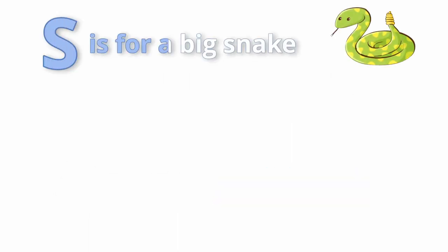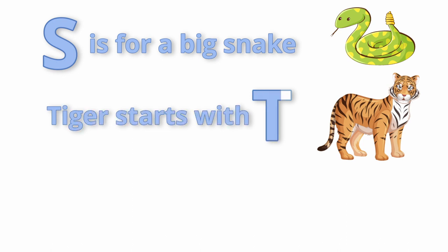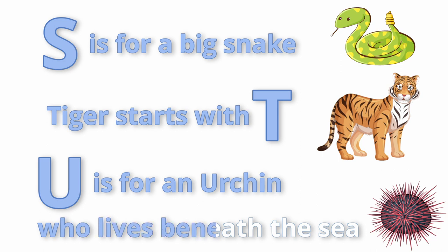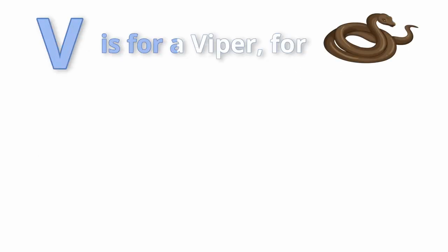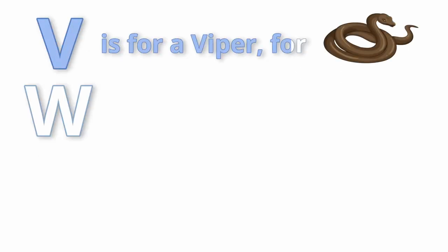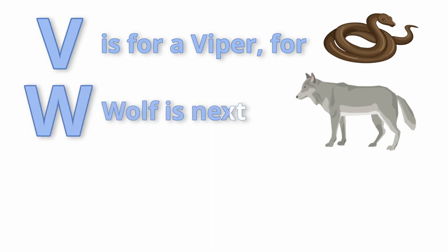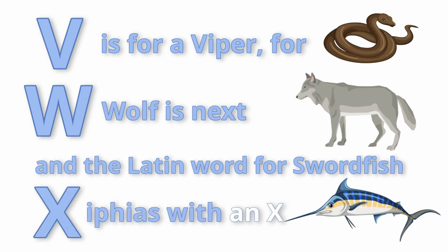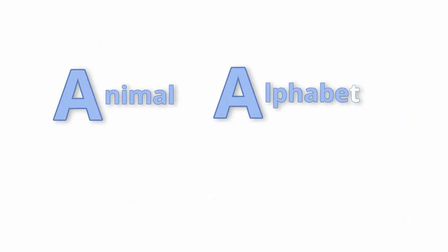S is for a big snake. Tiger starts with T. U is for an urchin who lives beneath the sea. V is for a viper. For W, wolf is next. And the Latin word for swordfish, Xiphias, starts with X.